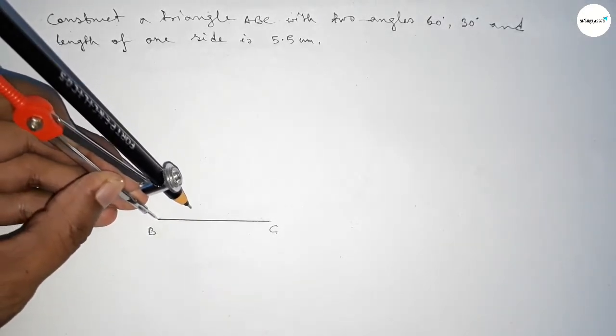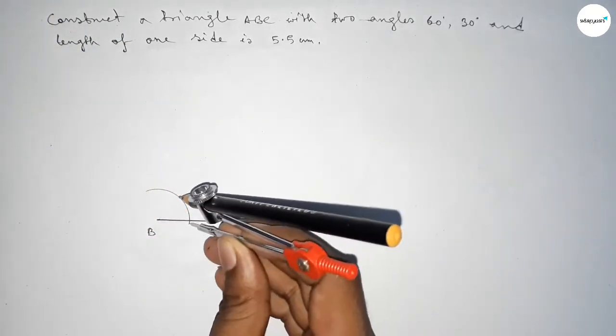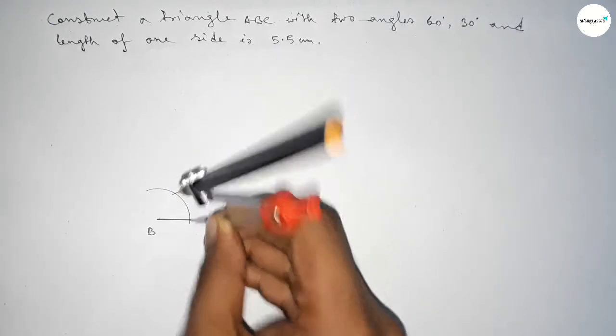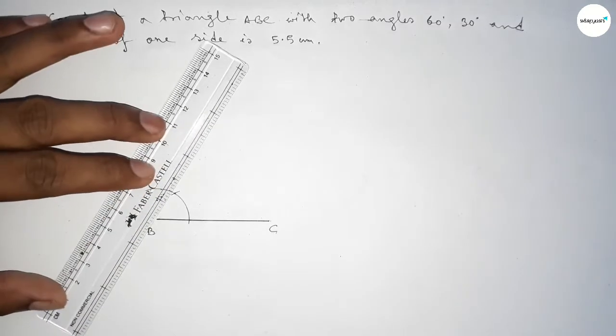Putting the compass here and taking any length and drawing an arc. Putting the compass here and cutting here so both curves intersect at a point. Now joining this line to get here a 60 degree angle.